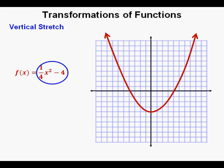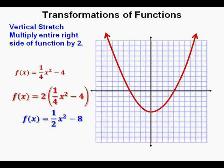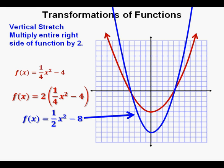Now we'll look at a vertical stretch. For a vertical stretch, instead of multiplying the coefficient of x squared, we multiply the entire right side of the function by a factor greater than 1. Multiplying the entire right side by 2 gives, when simplified, f of x equals 1 half x squared minus 8. This produces a skinnier parabola that starts lower at a y-intercept of negative 8.